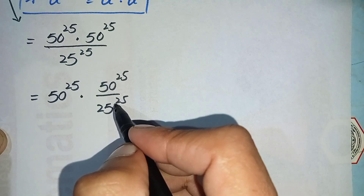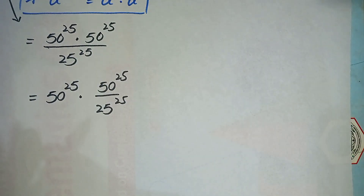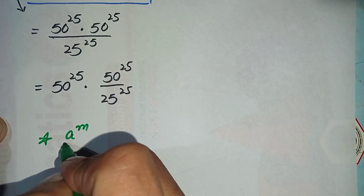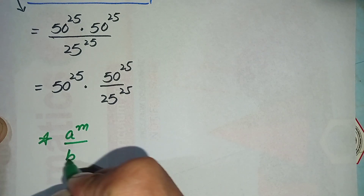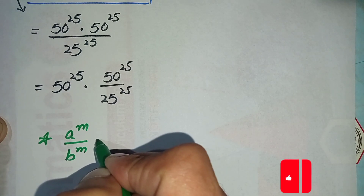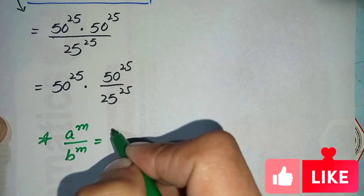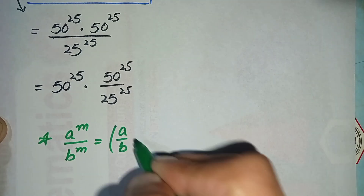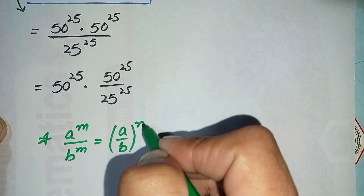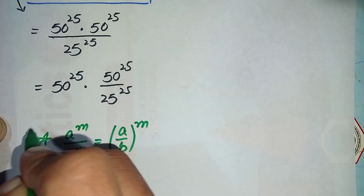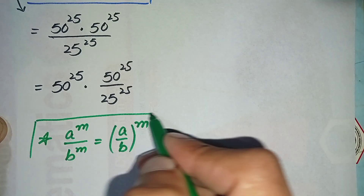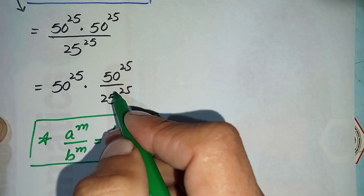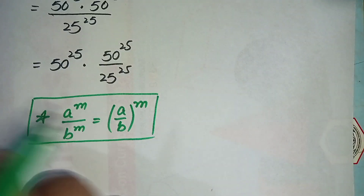From here we will take 25 common, and we will use the exponential formula: a raised to power m divided by b raised to power m is equal to (a divided by b) whole raised to power m. We will apply this formula here, so this equation will become...